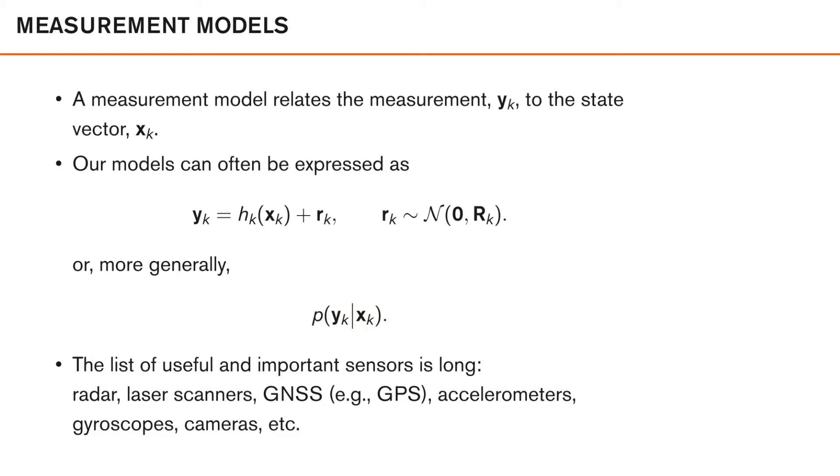The list of useful and important sensors is very long and includes, for instance, radars, laser scanners or so-called lidars, and we can also have cameras. We have these global navigation and satellite systems, the American GPS system, for example, or the European Galileo. And we also have accelerometers and gyroscopes and so on.